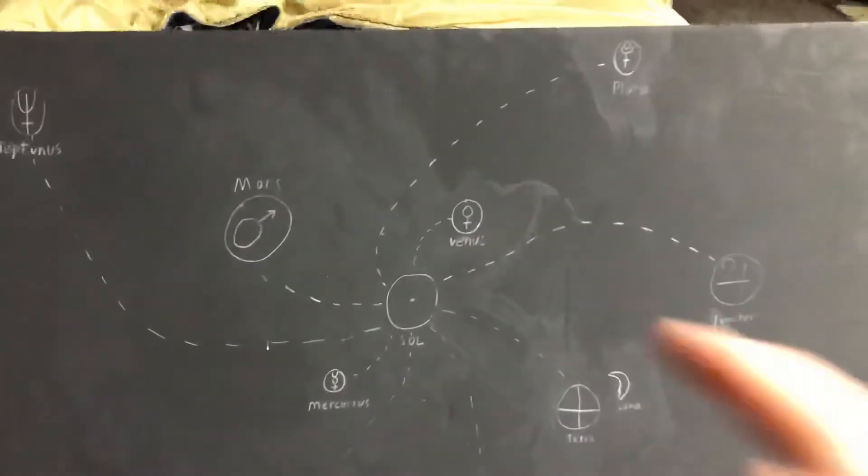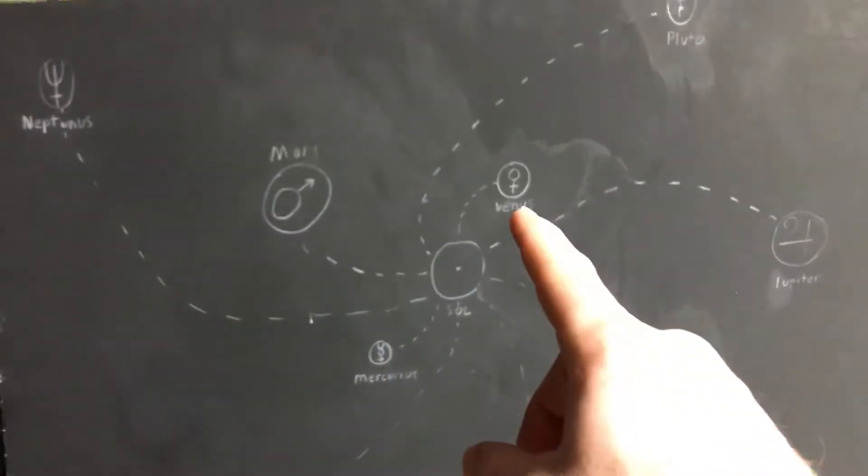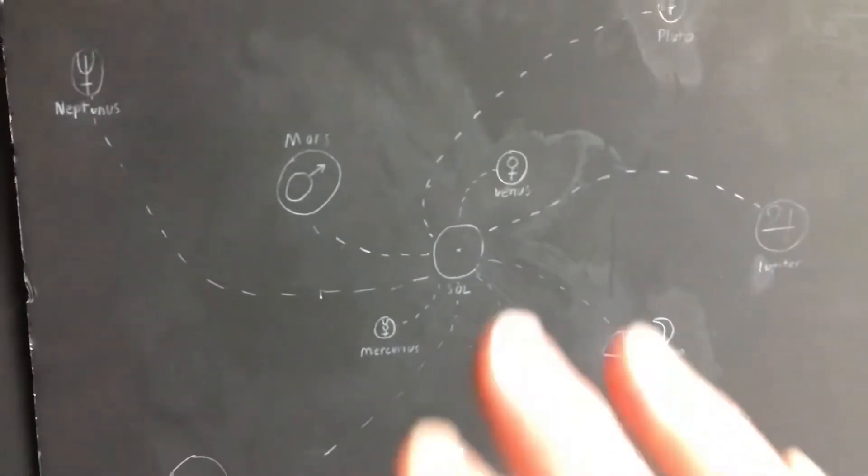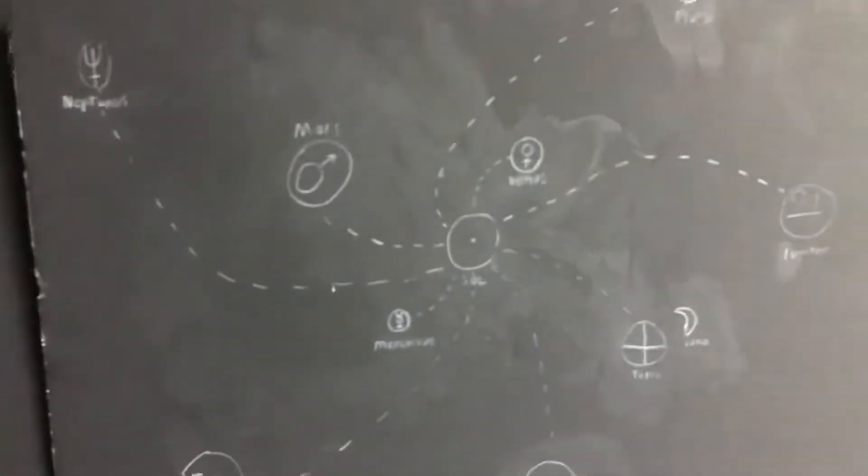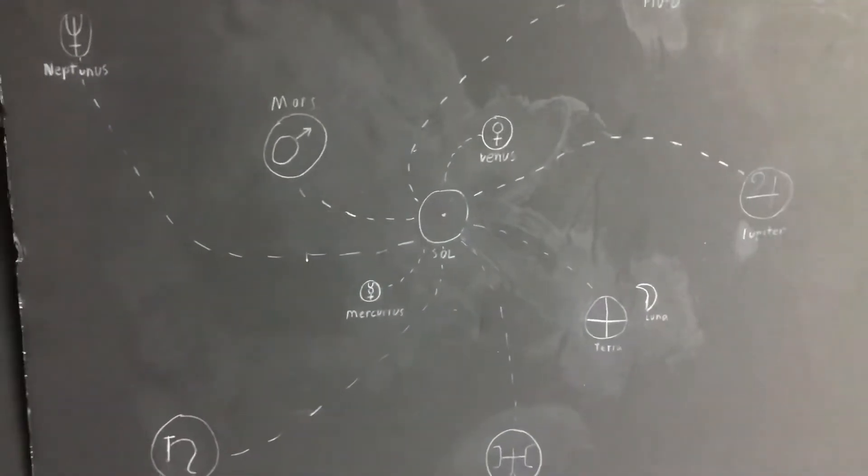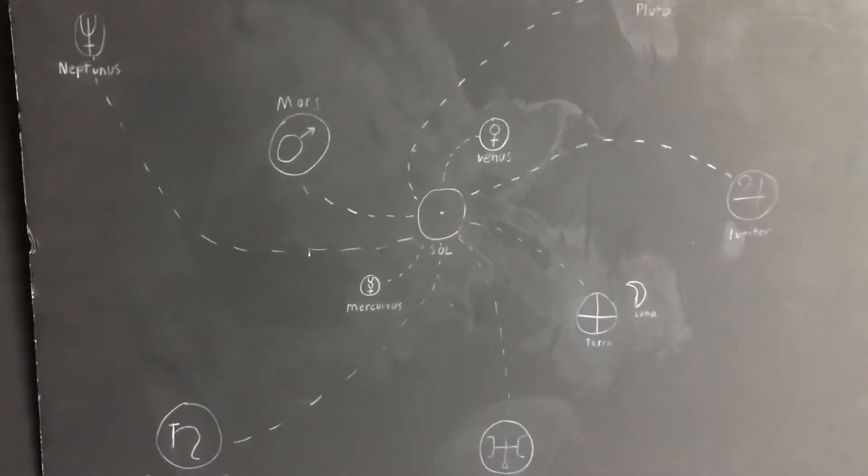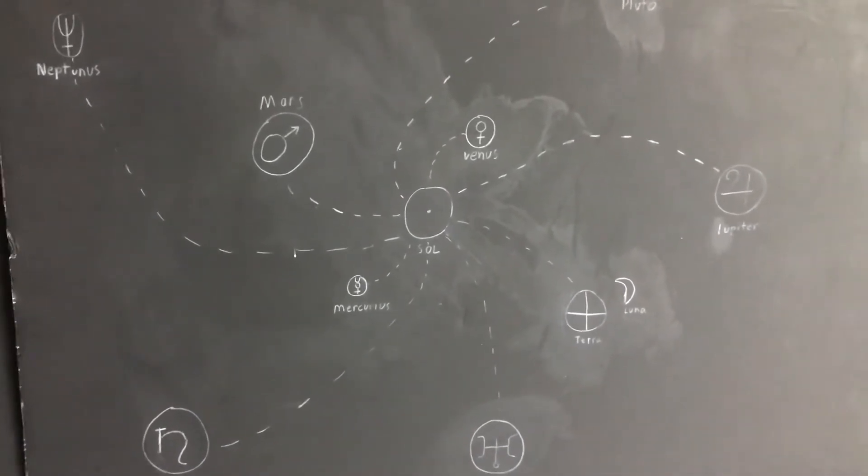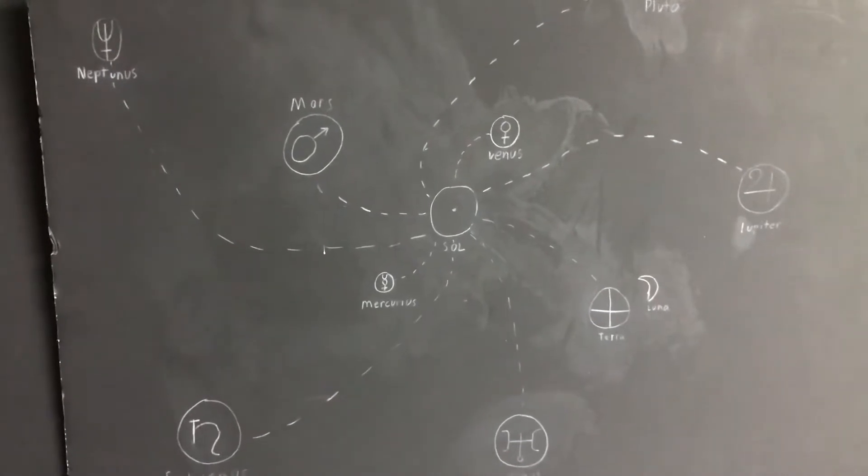Now the sun has a corona, a magnetic field. Venus does. Mars does. Now some of these planets they say don't have a magnetic field. You know, the magnetic field is stripped off because the core is dead. Inaccurate. The truth is, the magnetic field isn't strong enough for them to qualify it as a magnetic field.